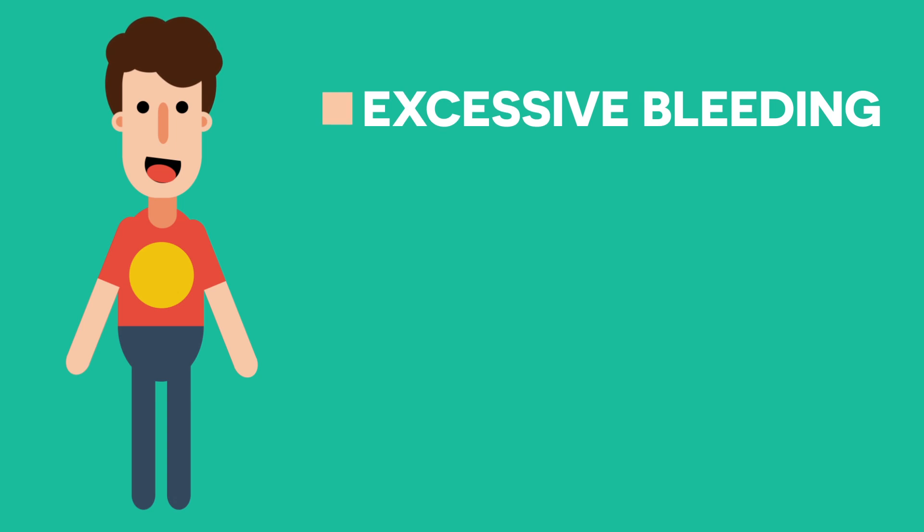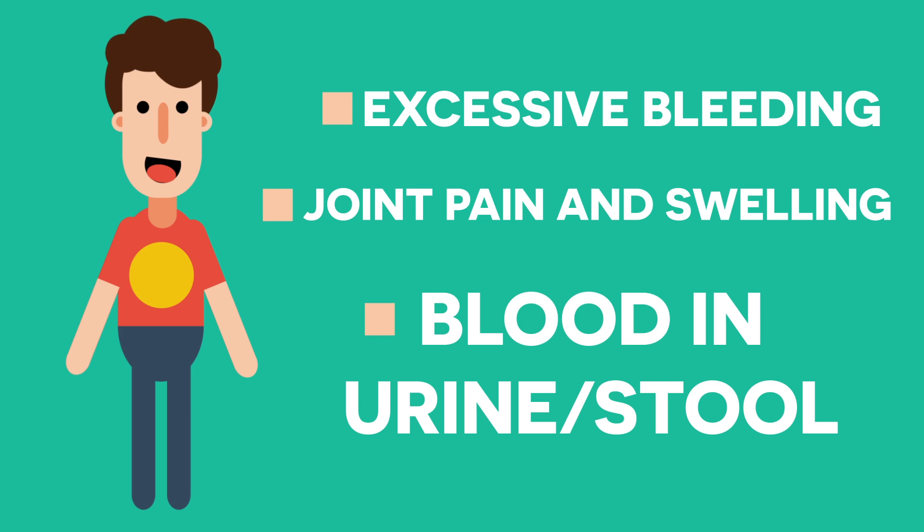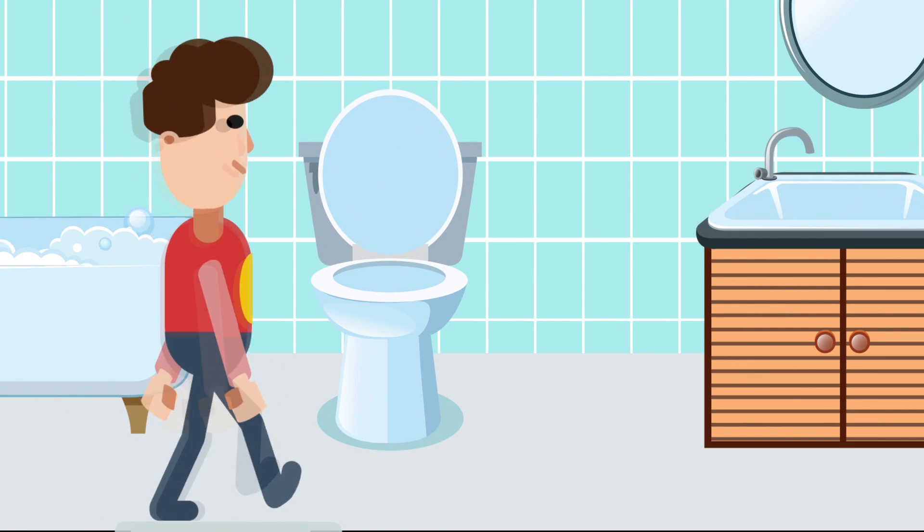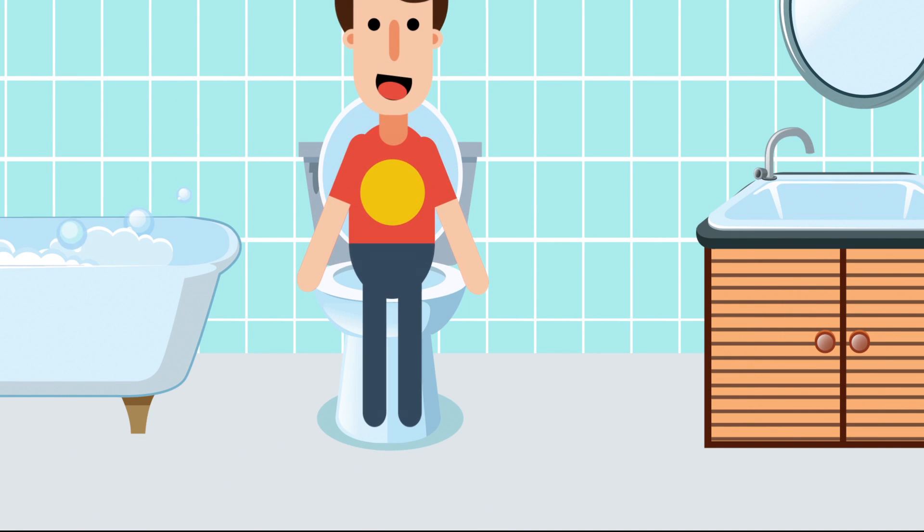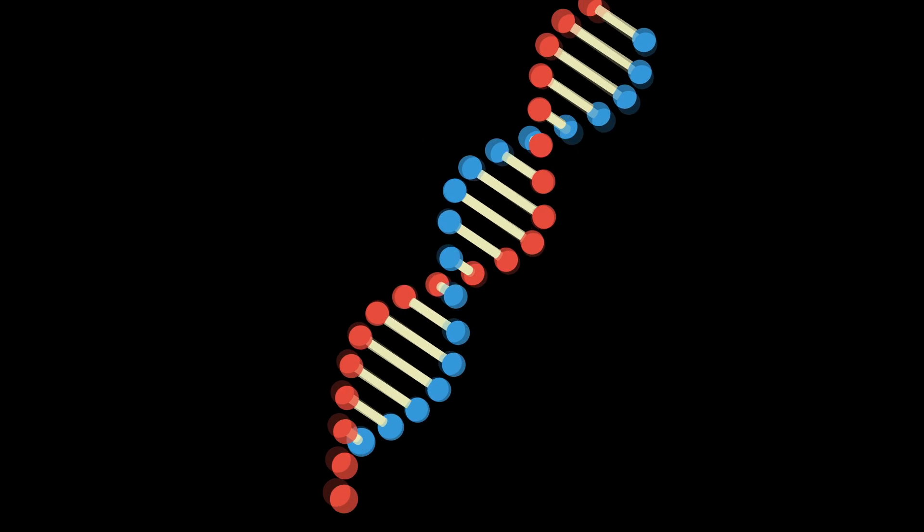He bleeds a lot from everywhere. His skin is very sensitive, and so he gets wounds often. He experiences pain and swelling in his joints, mostly in his knees, elbows, and ankles. And when he goes to the bathroom, there's more blood to lose. So let's get into exactly what causes these symptoms.